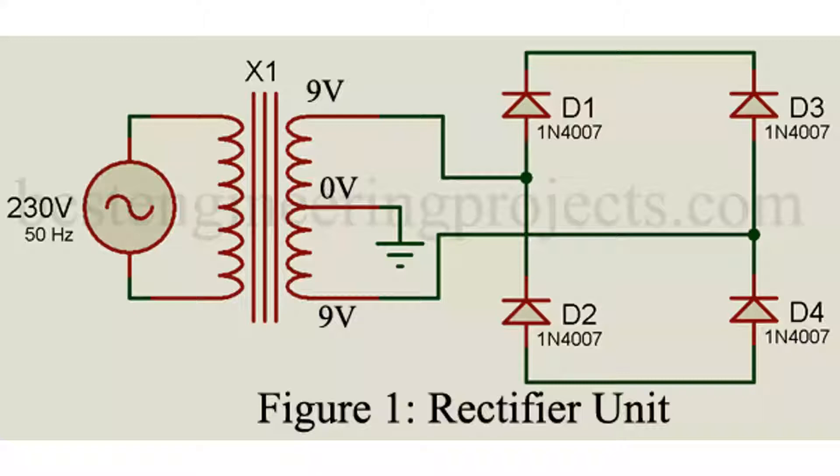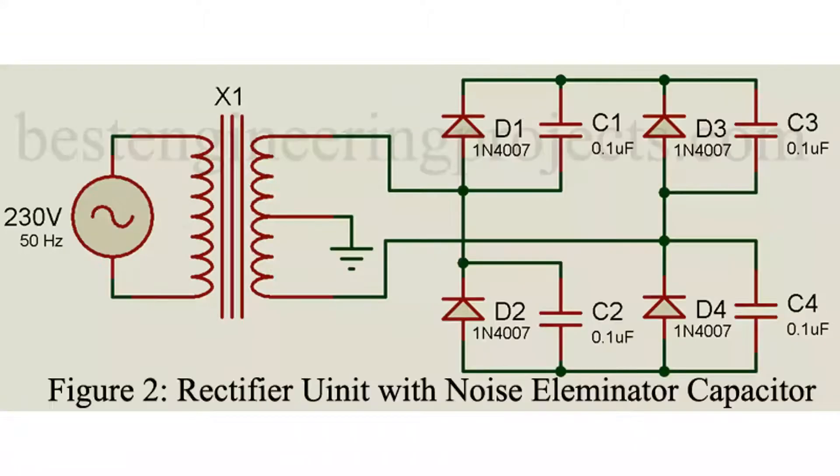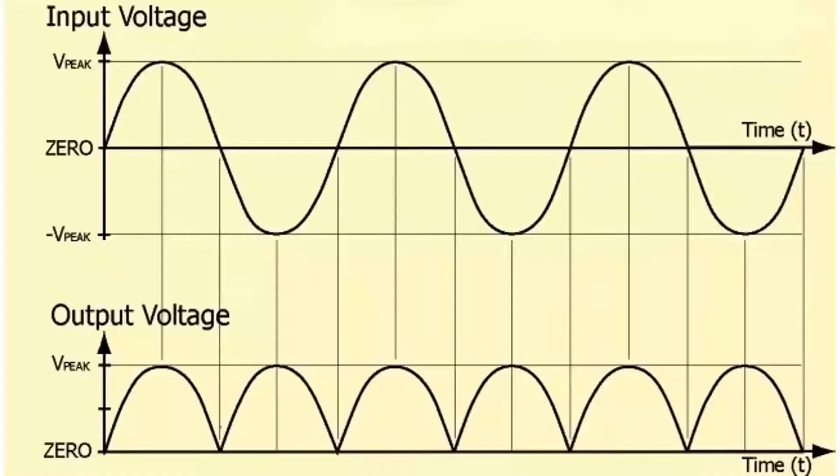The rectifier circuit is designed using four rectifier diodes, 1N4007. Four ceramic capacitors each of value 0.1 microfarad are connected across each rectifier diode D1 to D4 to eliminate noise and harmonics available in supply frequency.